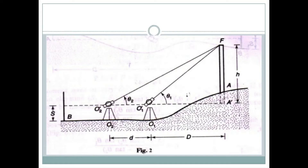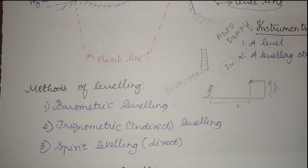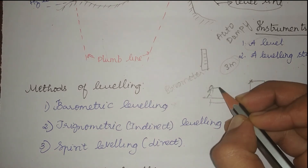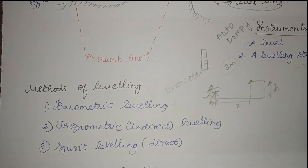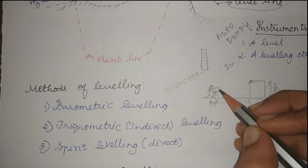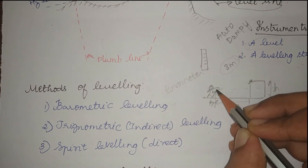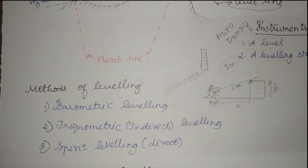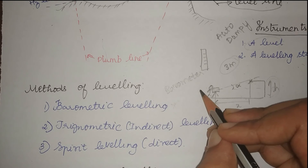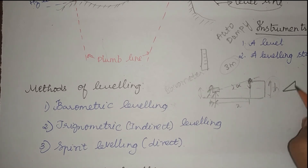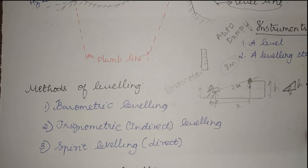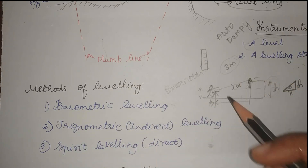Next is trigonometric leveling, also called indirect leveling. Instead of using a barometer, I set up a leveling instrument at a known horizontal distance x from the building. From there I sight the top edge of the building and measure the angle of elevation — say it is alpha. In this triangle I have the horizontal distance x and the angle alpha. Using trigonometric relations, I can arrive at the height of the building. This is what we do in trigonometric leveling.